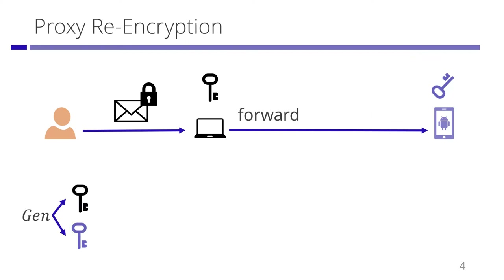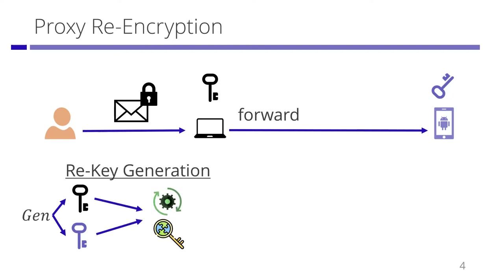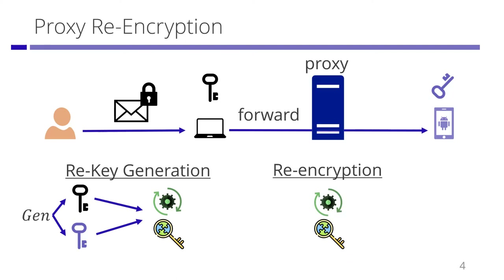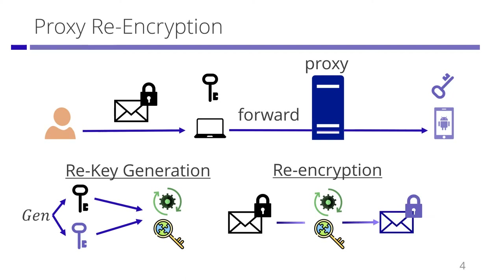In proxy re-encryption, we have a re-encryption key generation algorithm that takes the delegator's key and the delegate's key as inputs and outputs a re-encryption key. Bob is a delegator and Chris is a delegate. There is a proxy which is given a re-encryption key and runs a re-encryption algorithm. The re-encryption algorithm takes the delegator's ciphertext and the re-encryption key as inputs and outputs a re-encrypted ciphertext for the delegate. The delegate can decrypt the re-encrypted ciphertext by using the delegate's key.